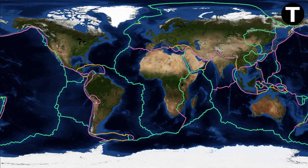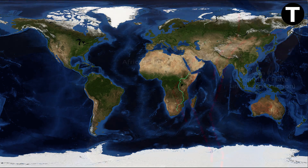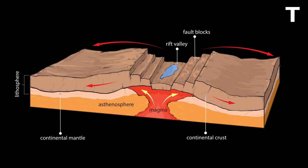But what happens when divergent boundaries occur within continents? That's where continental rifts come into play. Take a look at the African Rift, a striking example — it's essentially a continental divergent boundary where Africa is slowly splitting apart. The African Rift is a prime example of how a new ocean can begin to form. As the African continent stretches and thins, it creates a rift valley. Deep below the surface, magma rises up, contributing to the process.